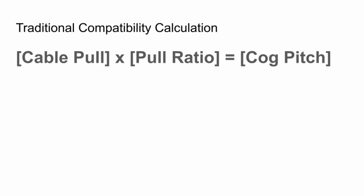The idea is that you can multiply the average cable pull and the average derailleur pull ratio. The shifter, derailleur, and cassette are compatible if the result is equal to the average cog pitch of the cassette. In my measurements, I find that this is practically never true — the average cable pull times the average pull ratio is never equal to the average cog pitch. Let me demonstrate by doing some calculations for you.